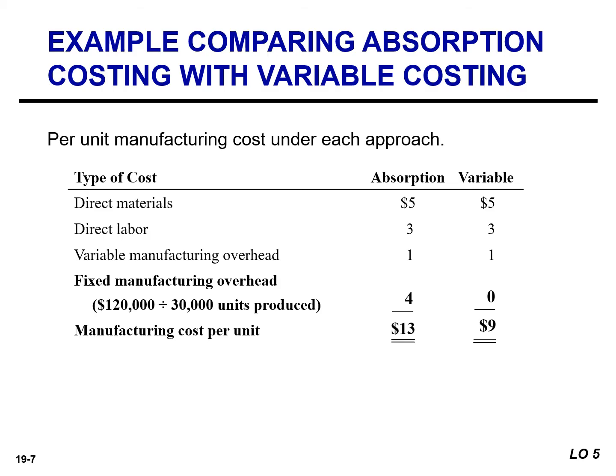Let's take a look at our product cost. Under absorption costing, we're going to include direct materials, direct labor, variable manufacturing overhead, as well as fixed manufacturing. For the fixed manufacturing overhead calculation, take the fixed manufacturing overhead of $120,000 and divide by the number of units produced — 30,000 — to arrive at $4 as our fixed manufacturing overhead cost per unit. Under variable costing, include only variable manufacturing costs: direct materials, direct labor, and variable manufacturing overhead.